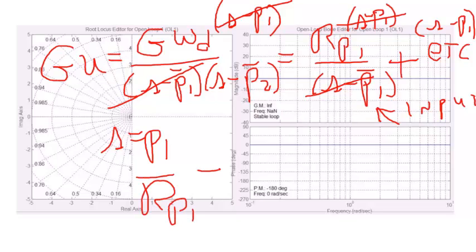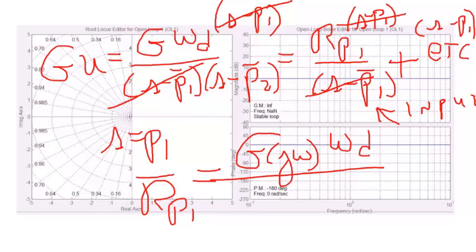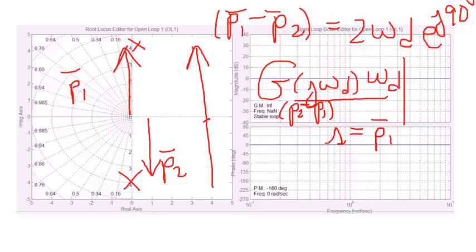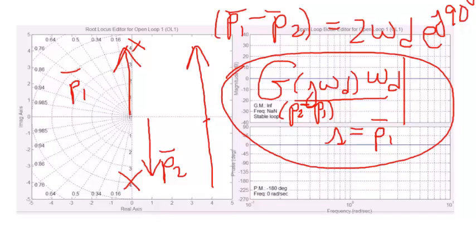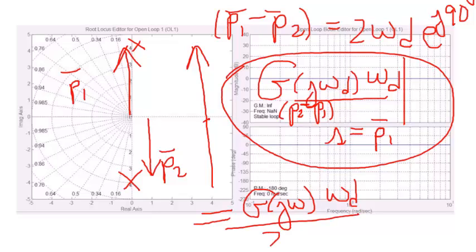And it will be equal to g of j omega times omega d over p1 minus p2. And it actually is that simple if you use phasers. And here, then, we see that g of j omega times omega over p2 minus p1. And that's going to turn out to be equal to g of j omega times omega d over 2 omega d e to the j 90 degrees.